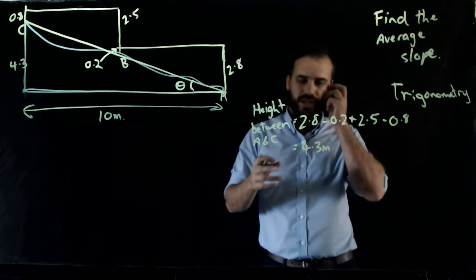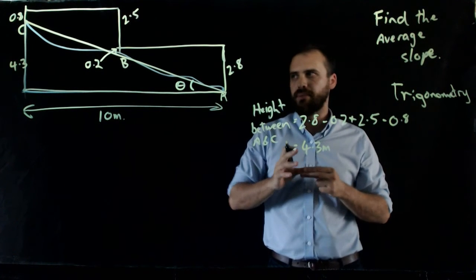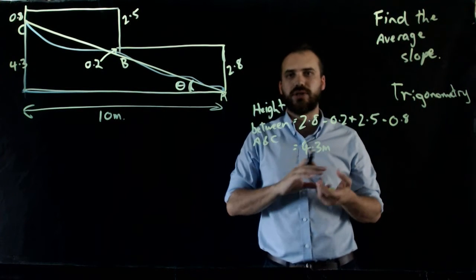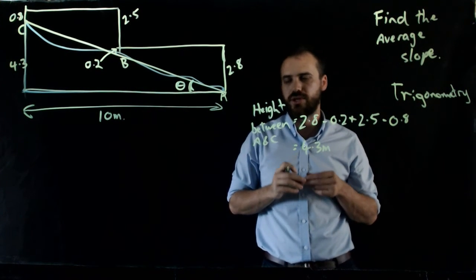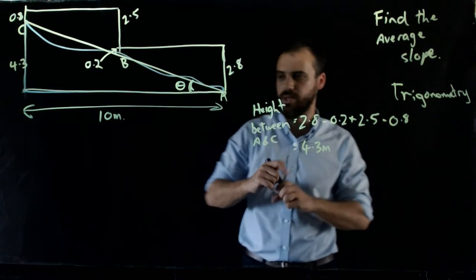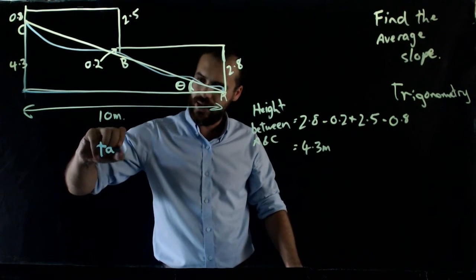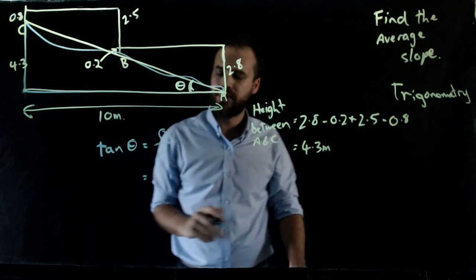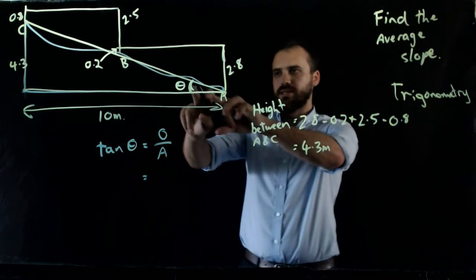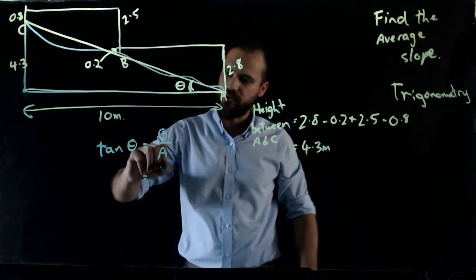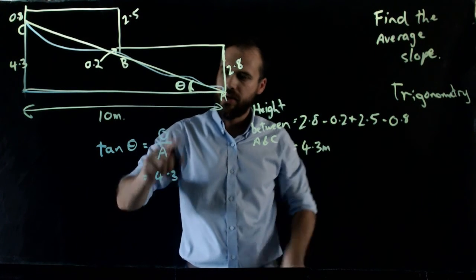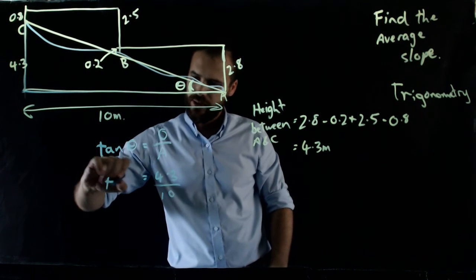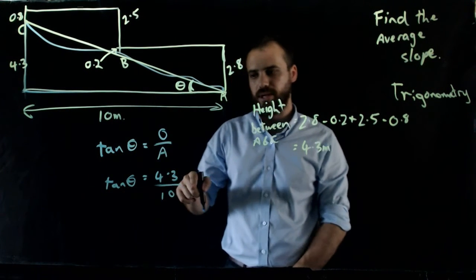Now that's revision — you've done that before, so that shouldn't be a problem. The problem is finding this angle. Thankfully there's only one trig ratio you're going to need for this kind of question: tan theta equals opposite over adjacent. We just need to fill in our values. The opposite is 4.3, and the adjacent is the distance along here — 10. So tan theta equals 4.3 over 10.